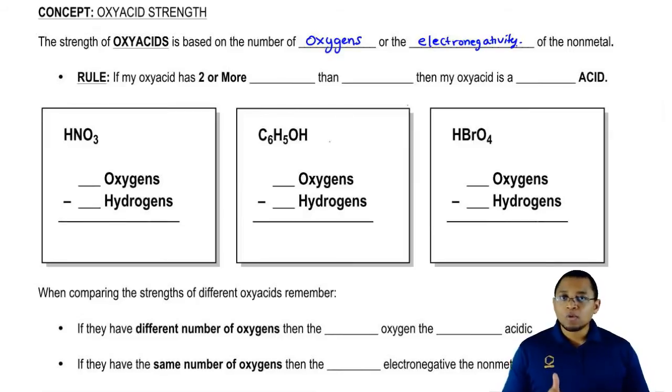Now the number one rule when it comes to them, really the only rule: if my oxyacid has two or more oxygens than hydrogens, then my oxyacid is a strong acid.